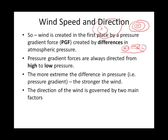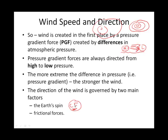Once wind is created, its direction is governed by two additional forces beyond the tendency to flow from high to low pressure. One force is the Coriolis force, which is related to the Earth's spin — the Earth rotating on its axis. The other force that redirects wind is the force of friction, abbreviated FF for frictional force.